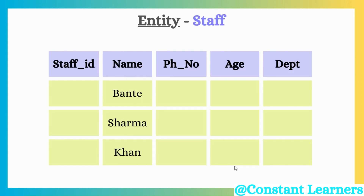Integrity constraints are nothing but a set of rules. Let's understand this with a simple example. Here we have an entity, staff. In this entity staff, we have some attributes like staff ID, staff name, phone number, age, and department. Now when we declare these attributes and create them, we need to define the constraints — the integrity constraints.